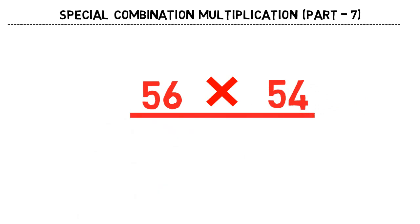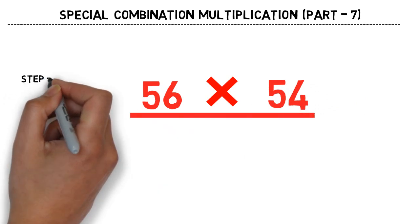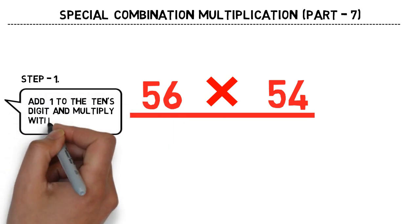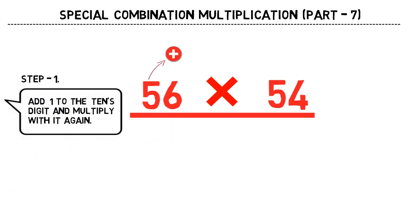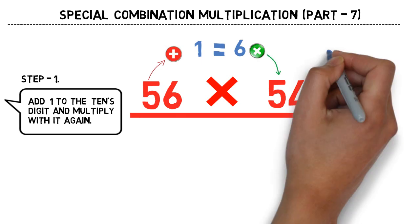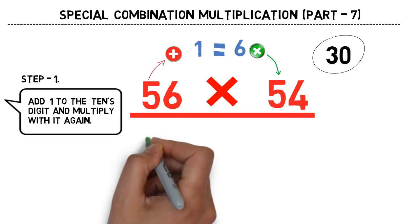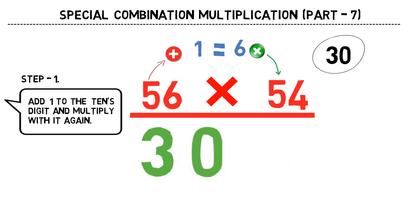In step one, add 1 to the tens digit, and tens digit is same so we can consider any of them. Here we have 5, add 1 to this, it becomes 6. Multiply this to the another tens digit which is 5 again. So 6 into 5 is 30. These are the initial digits or the leftmost digits of our answer.